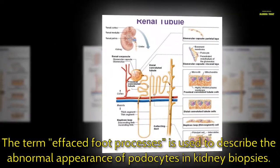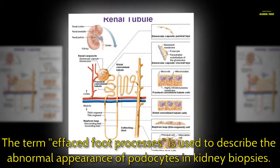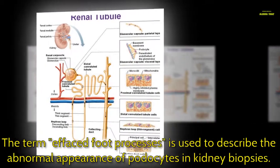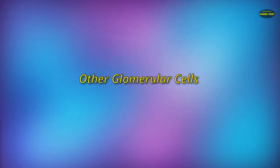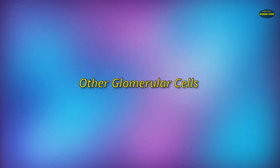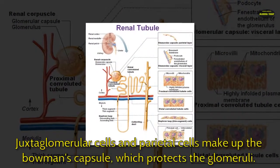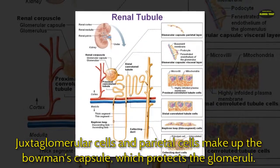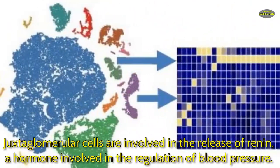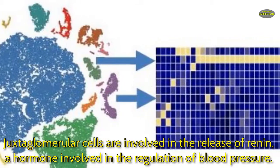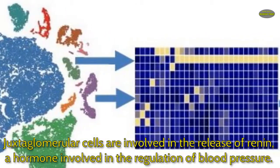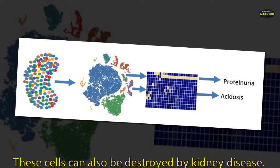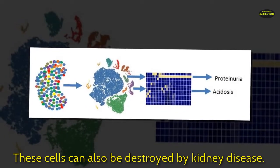The term effaced foot processes is used to describe the abnormal appearance of podocytes in kidney biopsies. Juxtaglomerular cells and parietal cells make up the Bowman's capsule, which protects the glomeruli. Juxtaglomerular cells are involved in the release of renin, a hormone involved in the regulation of blood pressure. These cells can also be destroyed by kidney disease.